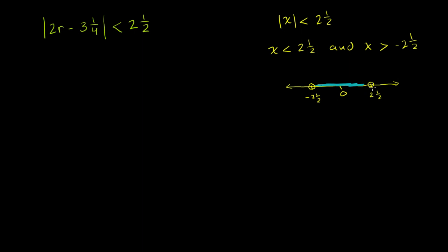That's exactly what these two statements say: x has to be less than 2½ and greater than negative 2½. If the absolute value were the other way — greater than 2½ — it would be the numbers outside, and it would be an 'or.' But we're dealing with a less than situation, so let's apply what we figured out.